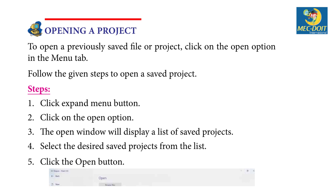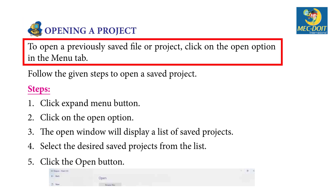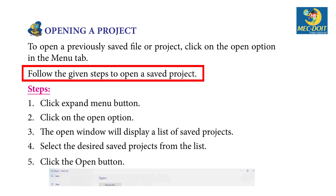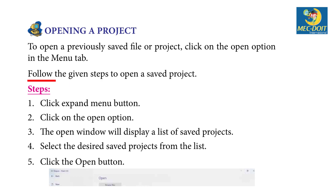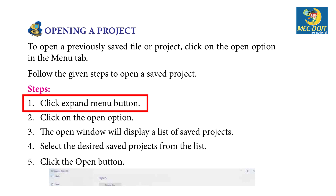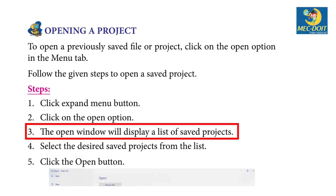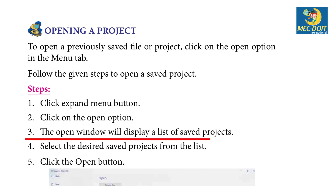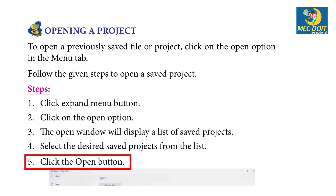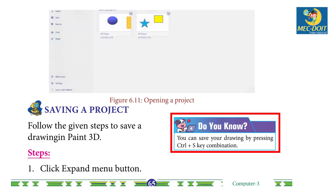Opening a Project: To open a previously saved file or project, click on the Open option in the menu tab. Follow the given steps: Step 1 — Click the Expand Menu button. Step 2 — Click on the Open option. Step 3 — The Open window will display a list of saved projects. Step 4 — Select the desired saved project from the list. Step 5 — Click the Open button.